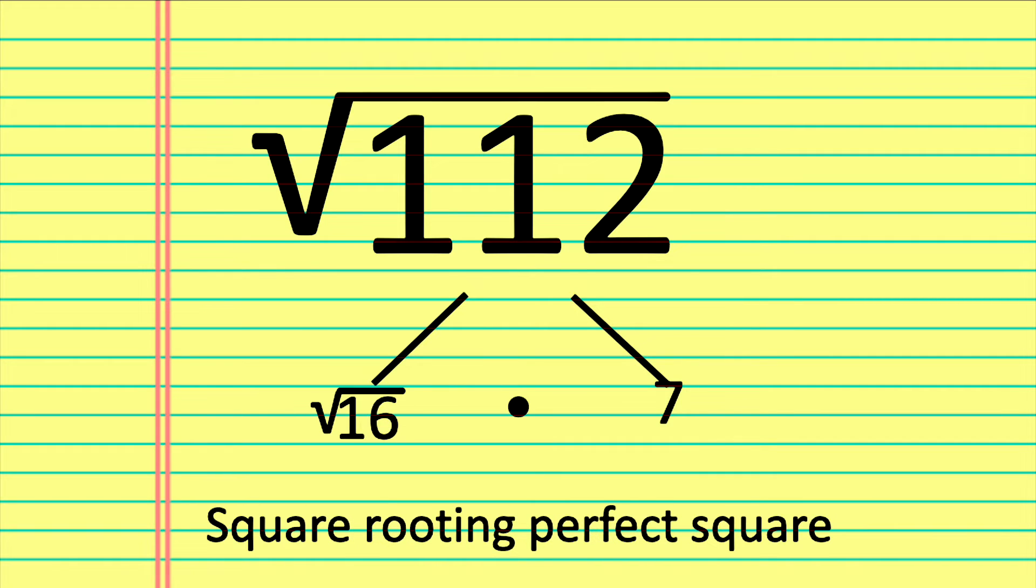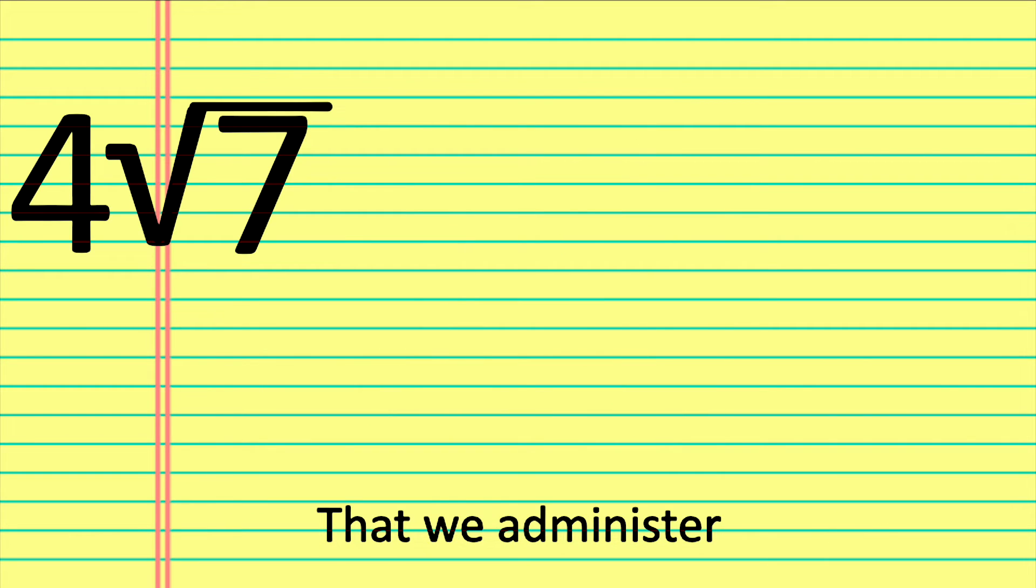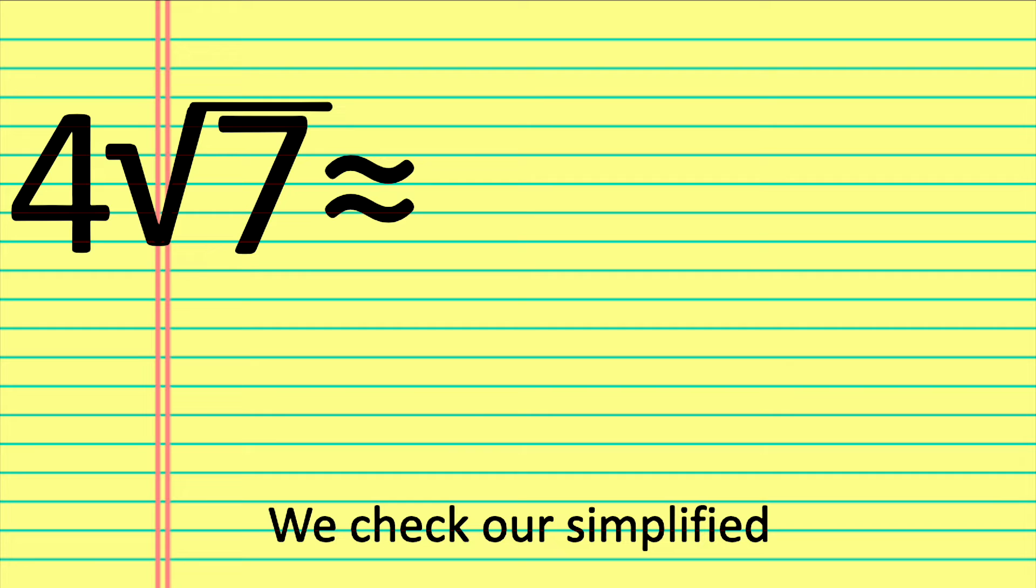Substitutes. Squaring perfect square leads an integer, the number times remaining root that we administer. We check our simplified answer.